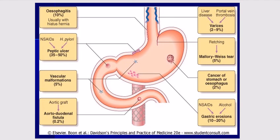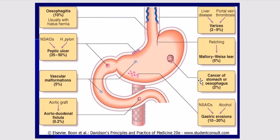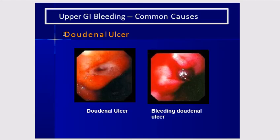Looking at incidence of upper GI bleed by cause: esophagitis accounts for 10%; peptic ulcer 35 to 50%, often caused by NSAIDs or H. pylori; gastric erosions from alcohol or NSAIDs account for 10 to 20%; polyps or esophageal cancer around 2%; and cirrhosis, liver disease, or portal vein thrombosis 2 to 9%. This is how the duodenal ulcer and gastric ulcer appear endoscopically.